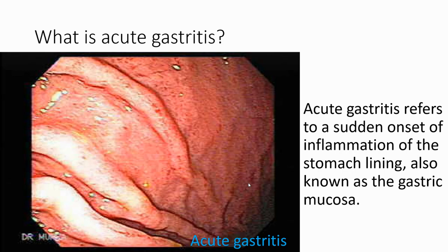So what is acute gastritis? Acute gastritis refers to a sudden onset of inflammation of the stomach lining, also known as the gastric mucosa. Gastritis is the inflammation of the mucosa in the stomach layer.